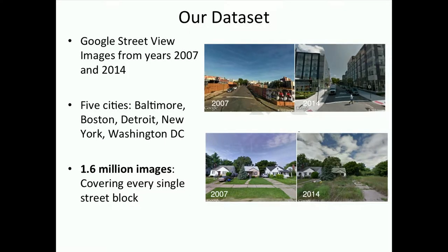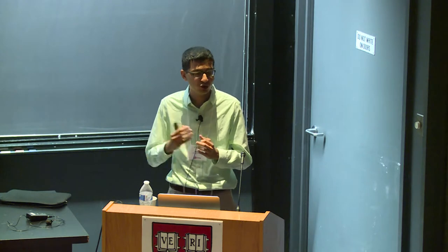We collected Google Street View data going back to 2007 from five cities: Baltimore, DC, Boston, Detroit, and New York. We collected pictures from every single street block — one image from 2007 and one from 2014. This has documented both urban growth and urban decline. The question then remains: how do we quantify urban appearance? How do we give a number to how much a place has improved or declined?